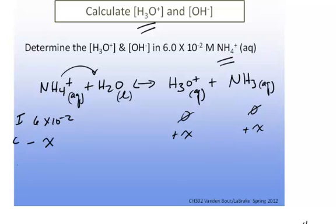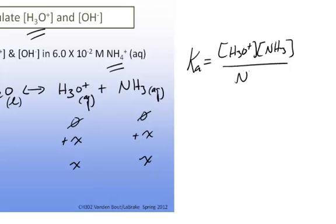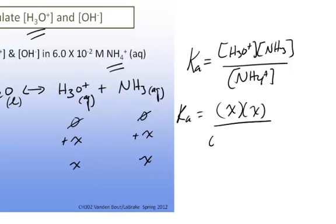At equilibrium, concentrations are: ammonium ion = 6 times 10 to the negative 2 minus x, and hydronium ion and ammonia each equal x. The equilibrium condition is Ka equals hydronium ion concentration times ammonia concentration divided by ammonium ion concentration, giving Ka equals x times x divided by (6 times 10 to the minus 2 minus x).